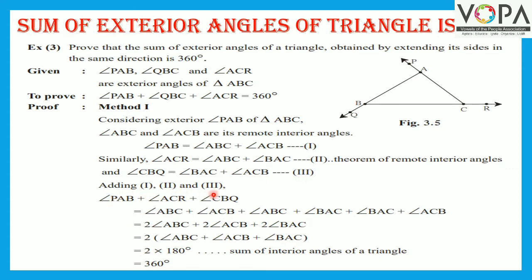Adding statements 1, 2, and 3: the left-hand side gives angle PAB plus angle ACR plus angle CBQ, which equals the addition of all right-hand sides — that is, angle ABC plus angle ACB plus angle ABC plus angle BAC plus angle BAC plus angle ACB.